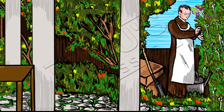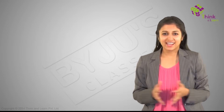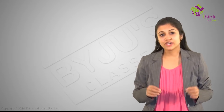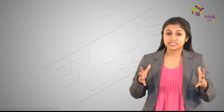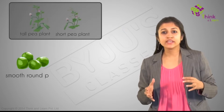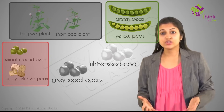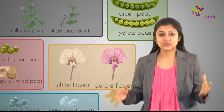You might assume he was quite a gardener, but no — he was not just any amateur gardener but a scientist who studied his pea plants so carefully he called them his children. He chose peas out of pure luck, but they turned out to be perfect models for genetic research with so many stable varieties. There was a tall variety and a short one; one type made smooth round peas while others were lumpy and wrinkled; there were green peas, yellow peas, grey seed coats and white seed coats, white flowers and purple flowers.